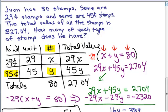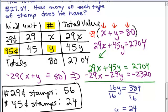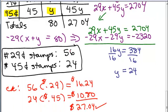Do we have 80 stamps? Yes, because we've got 56 stamps and 24 stamps. Is that value going to be 2704? So here we go. You can see we've got 80 stamps, because 56 and 24 is 80, and we can see that that checked out and came out to 27 dollars and 4 cents.